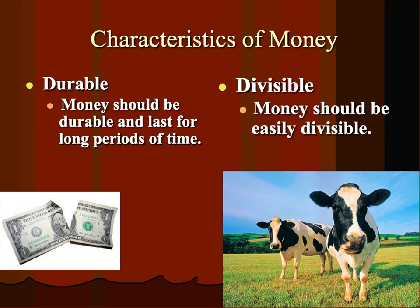It has to be easily divisible. A dollar you can break into quarters, pennies, and dimes — $50 is easy to break — so you can make change very easily. If you go into the McDonald's drive-thru and they say that hamburger is worth one leg of a cow, you're going to have a three-legged cow walking home. So money should be easily divisible.